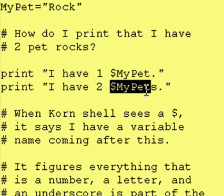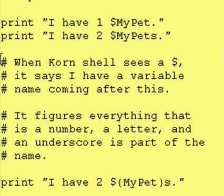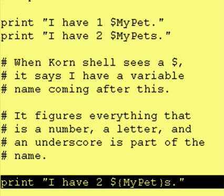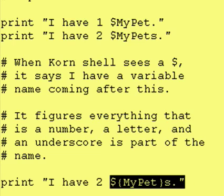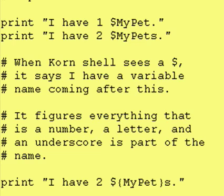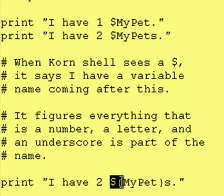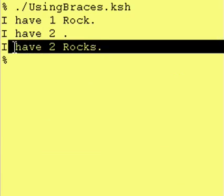So how do you print out the contents of my_pet and then print a letter S immediately after it? Cornshell allows you to use curly braces. This says: normally when you see a dollar sign, anything that is a letter, number, or underscore is part of the variable name. But I am explicitly going to tell you what the variable name is — it is what is in between the two curly braces. So in this case, Cornshell sees ${my_pet} and says it is just looking for the contents of my_pet, which is the word rock. It substitutes rock, and then prints the S and the period, as you can see from the third line of output.